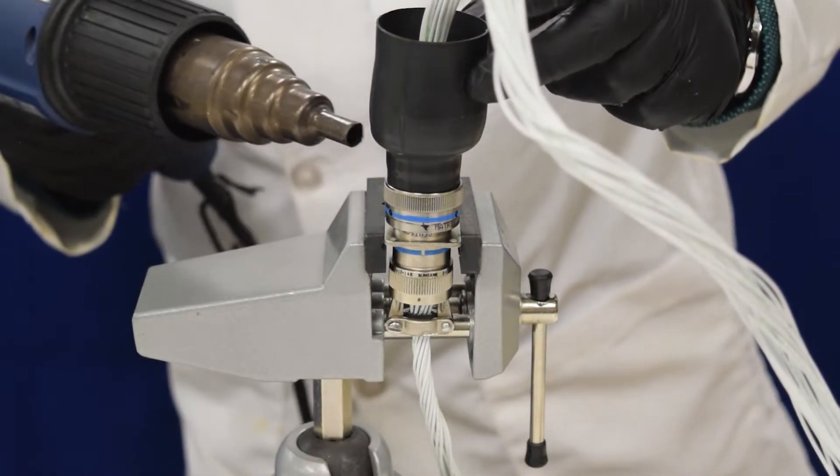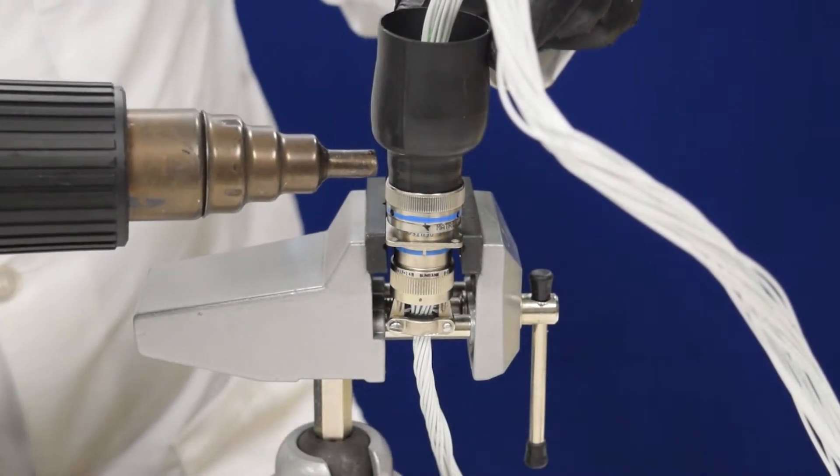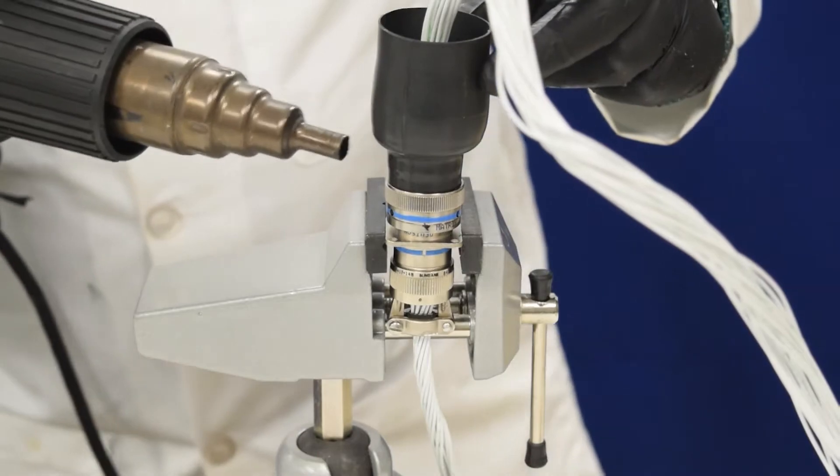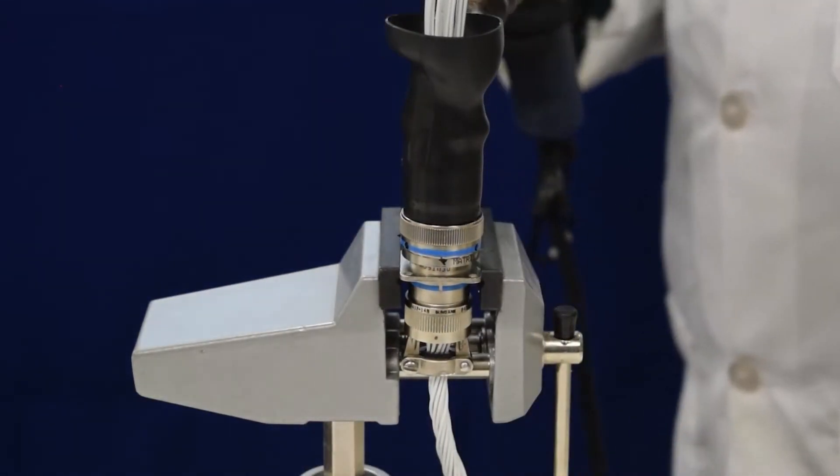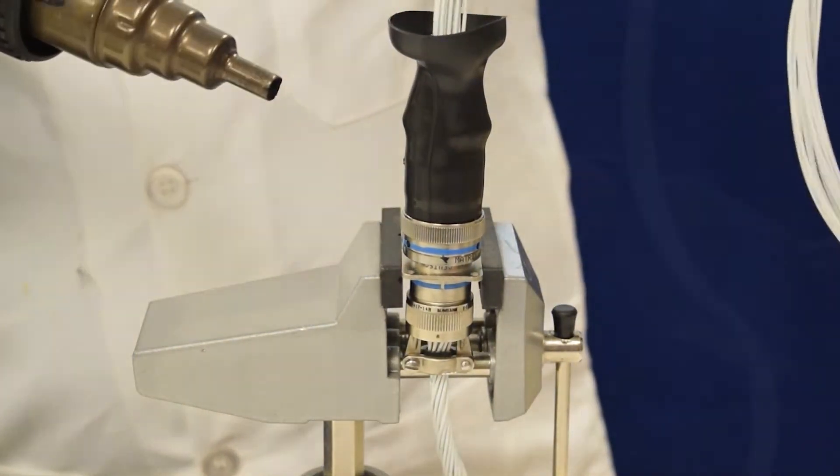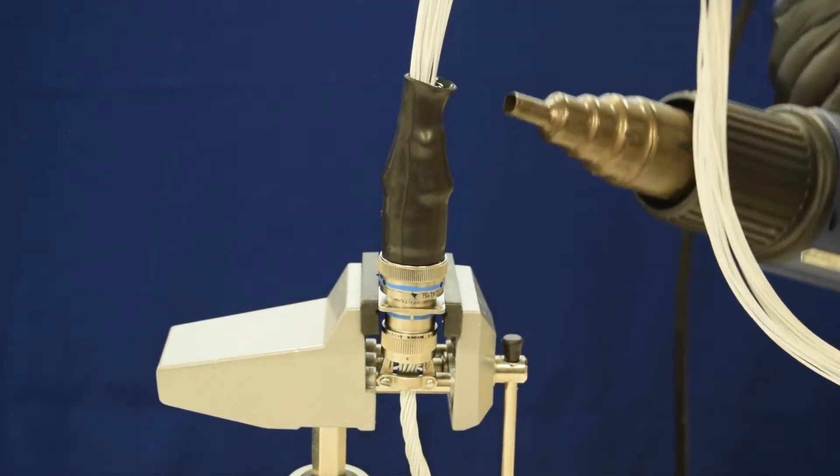Apply heat where you left off on the H end of the boot and slowly work your way to the J end of the boot. Ensure that enough sealant is injected into the boot so that some excess sealant material is pushed out when the J end of the boot is fully recovered. Wipe any excess sealant off of the cable and molded boot with a clean cloth.